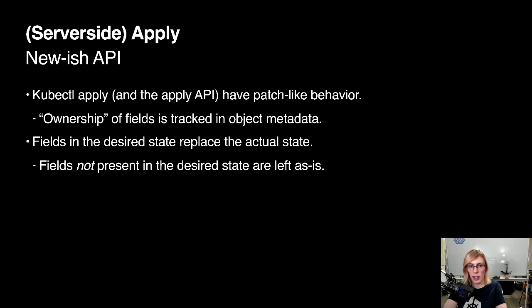There's also the server-side apply API, rolled out roughly a year ago. It provides the kubectl apply behavior as an actual API in Kubernetes, rather than forcing people to use kubectl apply the CLI tool. This adds metadata giving ownership to specific fields in an object. If you change a field, you become an owner. When you specify a change, only the fields you own are taken into account — if you own a field and don't specify it in your new desired version, it will be removed. Fields you don't own are ignored; the existing version is kept.